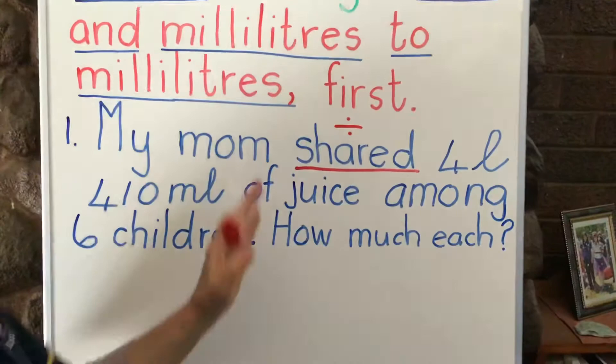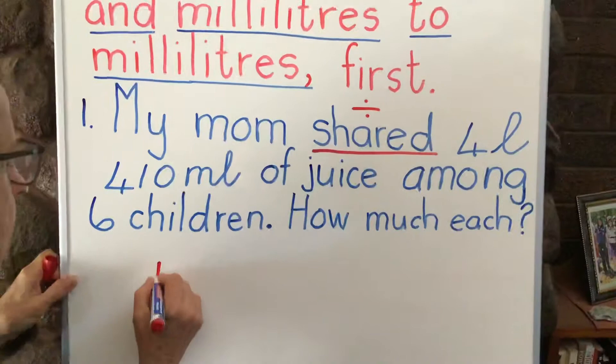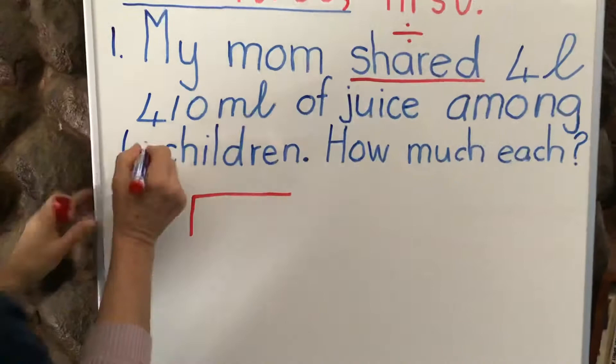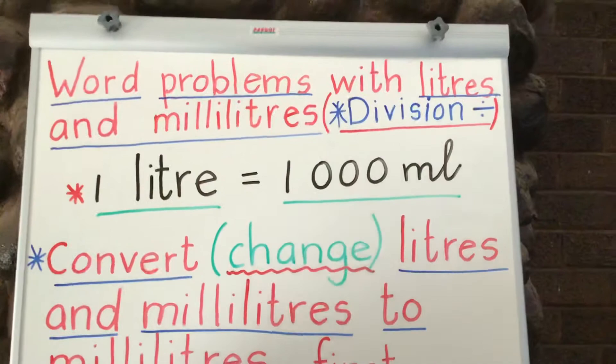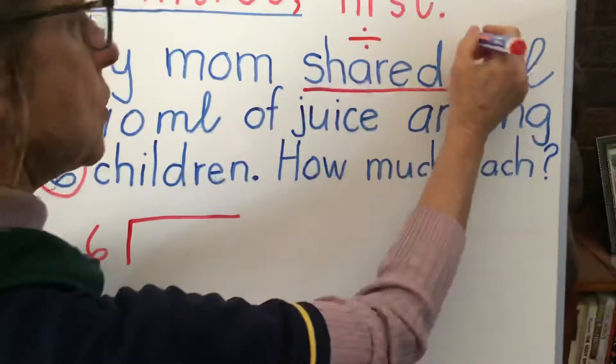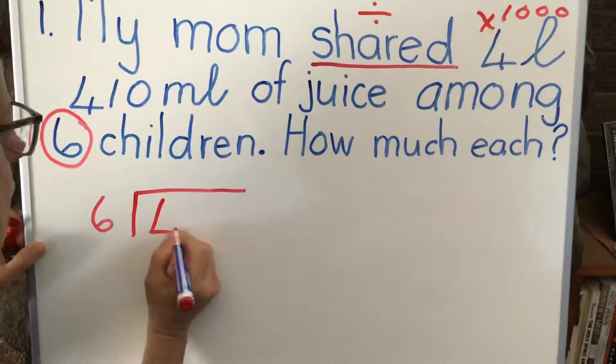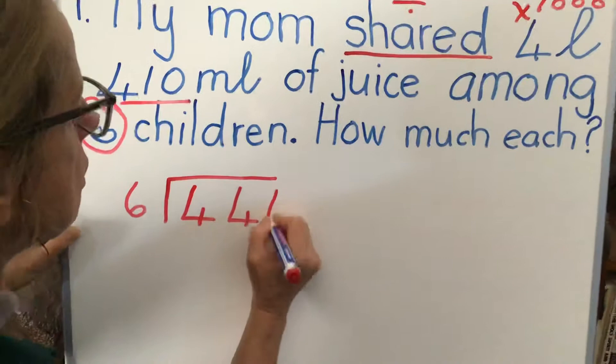Let us put our little box over here and we're going to remember how many children they're sharing. Mom shared it among six children so that's going to go there. One liter equals 1,000 milliliters. So remember we're going to convert the liters which is going to be four times 1,000 and that will be 4,000. Then we've got 410 milliliters which is going to go straight into the hundreds, tens, and units places.